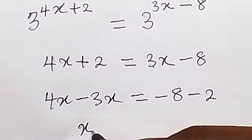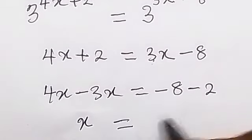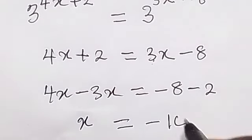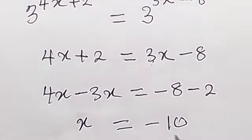And therefore 4x minus 3x, that's simply x, 4 minus 3, that's 1, that's x equals to minus 8 minus 2, and that's minus 10. So the result here is minus 10, therefore x equals to minus 10.